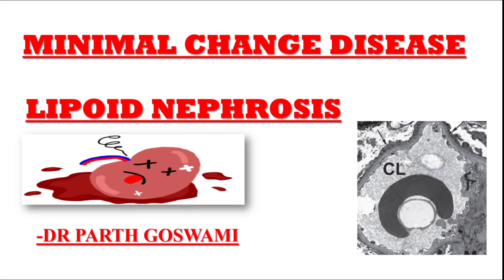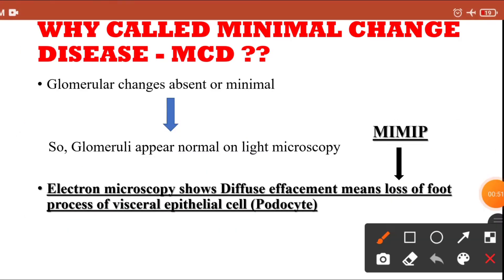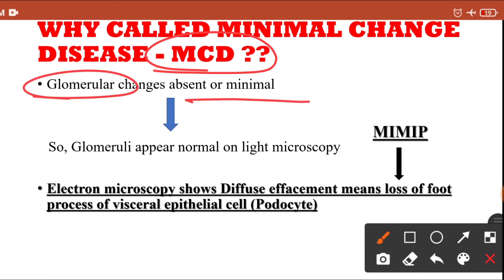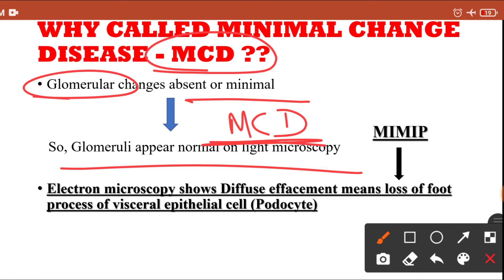If you have not seen my previous lectures on pathogenesis of glomerular injury and nephrotic syndrome, check the playlist first so you can easily understand minimal change disease. Now, why is it called minimal change disease? In this particular nephrotic syndrome, the glomerulus is absolutely normal on light microscopy — there is no significant finding in the glomerulus. That is why the name given is minimal change disease (MCD). In other types of nephrotic syndrome, there is GBM thickening or inflammation, but here it is totally absent.